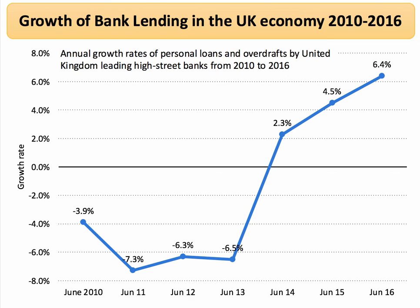This chart shows the annual growth of loans and overdrafts in the UK for the last seven years from June 2010 through to the summer of 2016 — the annual 12-month growth rate. The main high street banks covered in this data are Santander, Barclays, HSBC, Virgin Money, Lloyd's, and RBS.